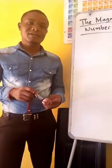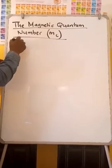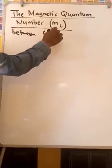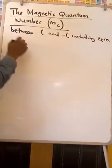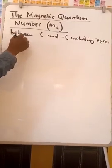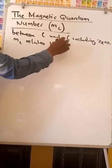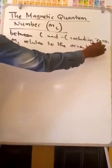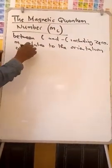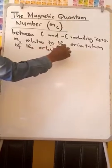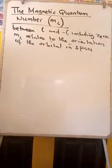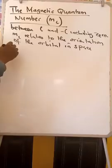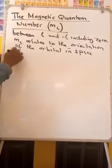Hi, in today's tutorial we'll look at the magnetic quantum number ML. ML has integral values between L and minus L, including 0. The value of ML relates to the orientation of the orbital in space relative to other orbitals in the atom. We can now look at quantum numbers for the first four levels of orbitals in the hydrogen atom.